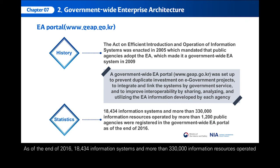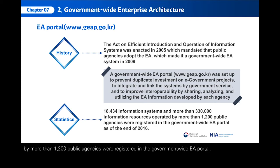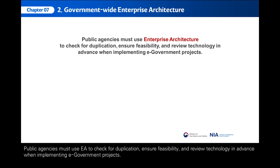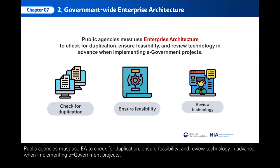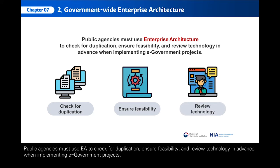As of the end of 2016, 18,434 information systems and more than 330,000 information resources operated by more than 1,200 public agencies were registered in the government-wide EA portal. Public agencies must use EA to check for duplication, ensure feasibility, and review technology in advance when implementing e-government projects.